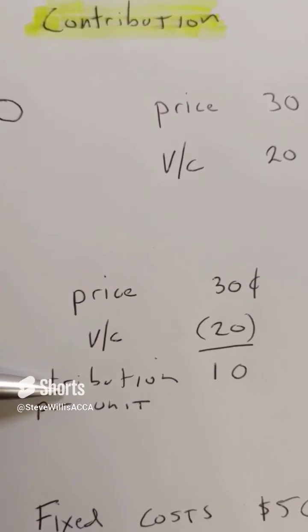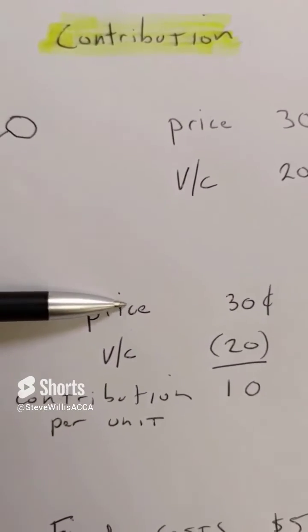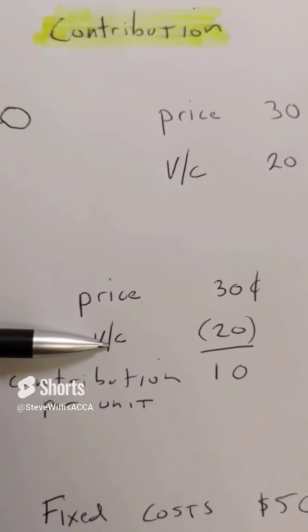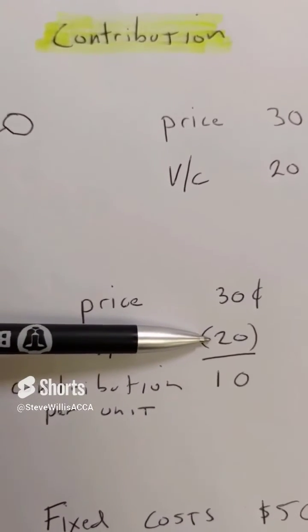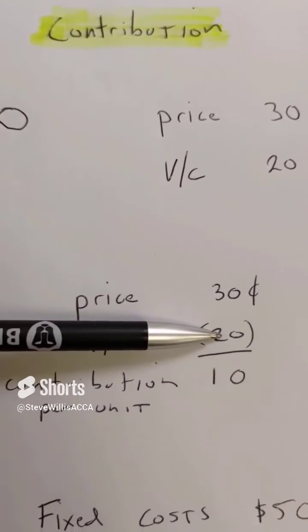Contribution per unit. Well, I sell for 30 cents. Variable costs, production and non-production, are 20 cents per unit.